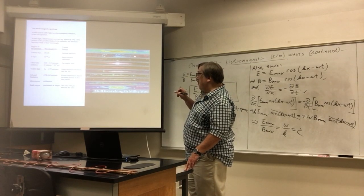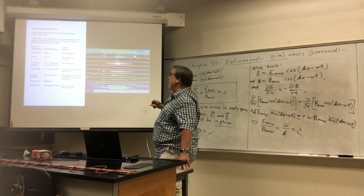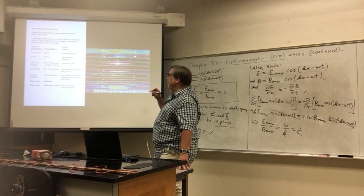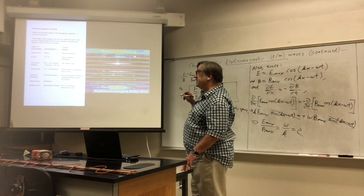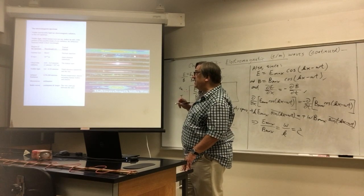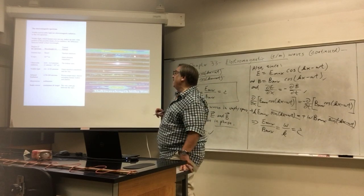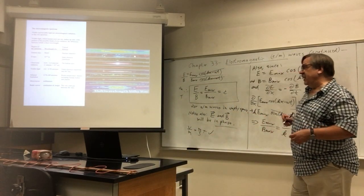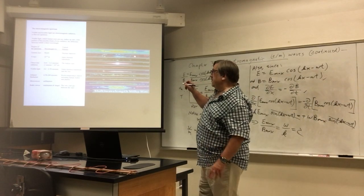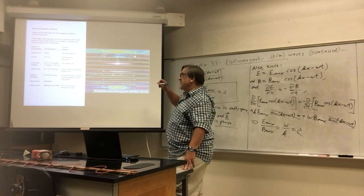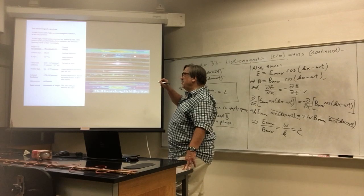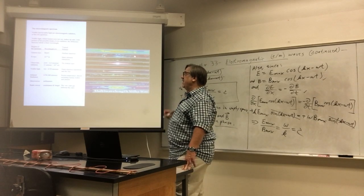Visible light is given off by stars roughly the same temperature as the sun. The sun radiates its maximum intensity right in the middle of the wavelengths of visible light — it is no coincidence that our eyes evolved to be most sensitive to those wavelengths. There are stars that are hotter than the sun whose maximum intensity is at wavelengths shorter than the eye can see — ultraviolet radiation.